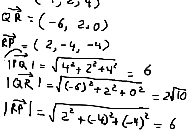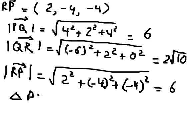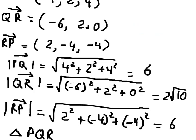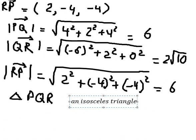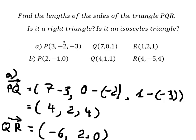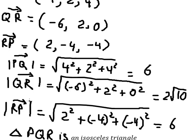We can see that |BQ| equals |RB|, both equal six, so we can say triangle BQR is an isosceles triangle. Now let's check whether there is a right angle. Since vectors BQ and RB have the same magnitude of six, we need to check angle B, specifically angle RBQ.